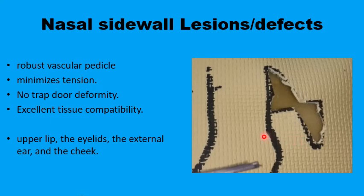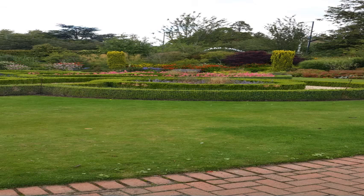The east-west flap can also be used in the eyelids, the upper lip, the external ear, and the cheek. It has excellent blood supply due to its very wide base, helps minimize wound tension, and produces no trapdoor or dog ear deformity. This concludes the presentation on the east-west flaps. As-salamu alaykum.